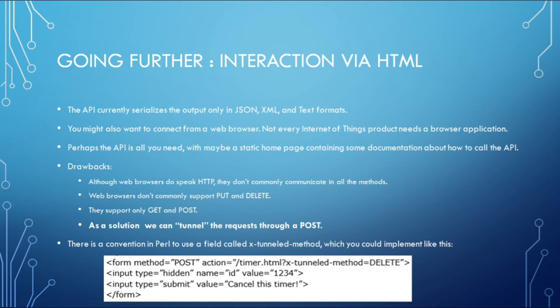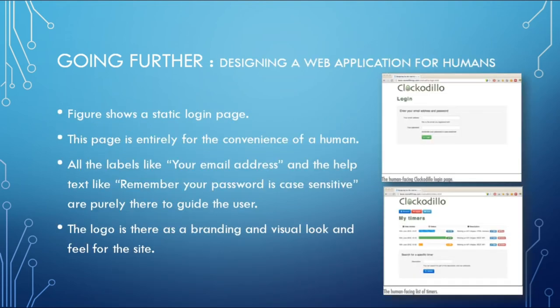In the case of Clockodillo, we do want a set of web pages — users should be able to look at their timers, assign descriptions, and so on. Although text-based APIs are more prominently used in IoT, you can also have an elegant and well-designed application for humans to interact with. For example, a static login page with labels like 'your email address' and help text like 'remember your password is case sensitive' are purely there to guide the user. The traditional API approach has users making an HTTP request to the server and receiving a response.